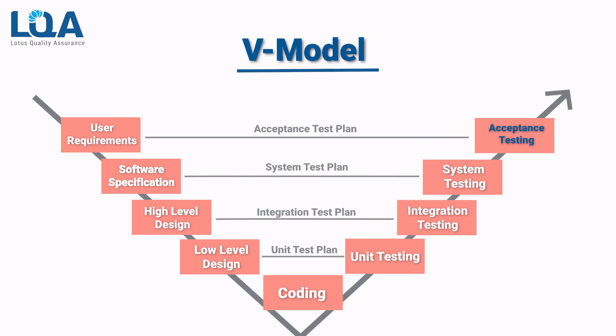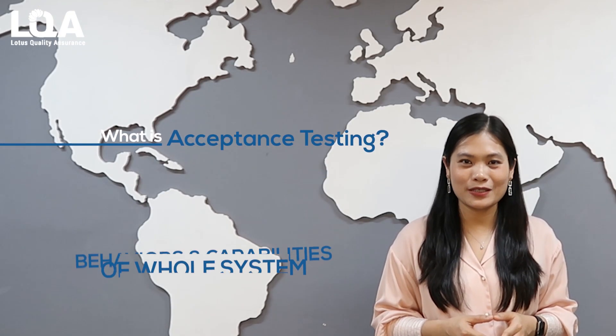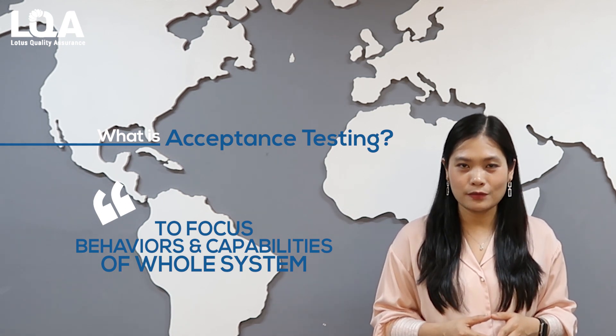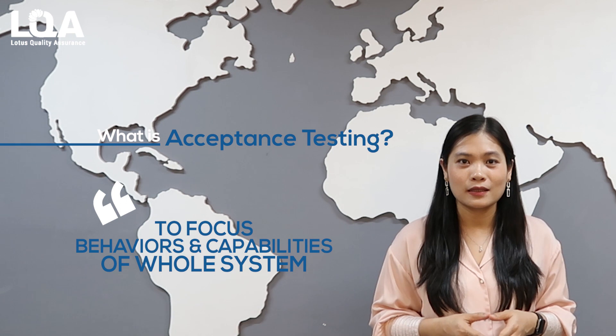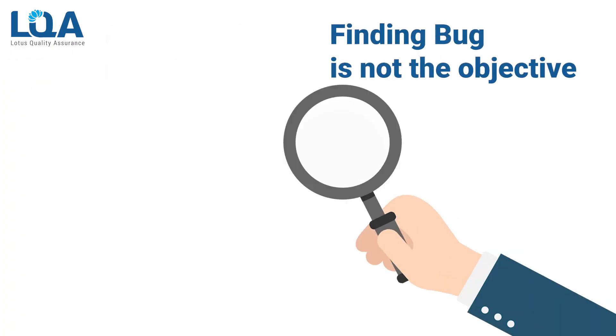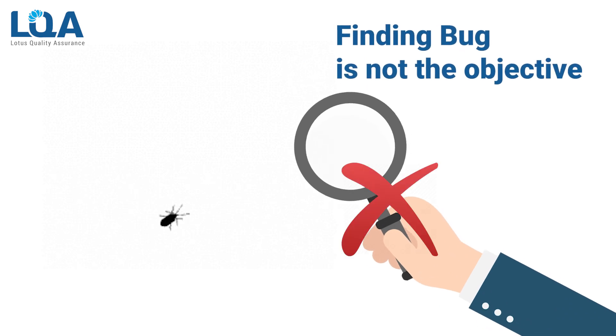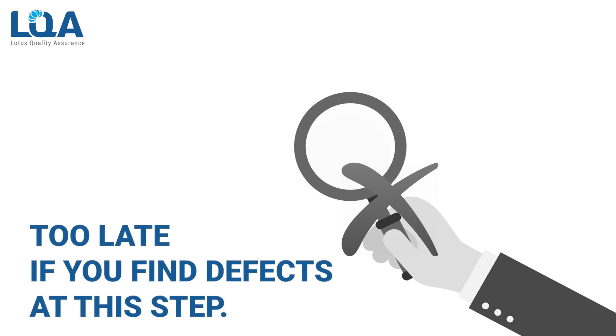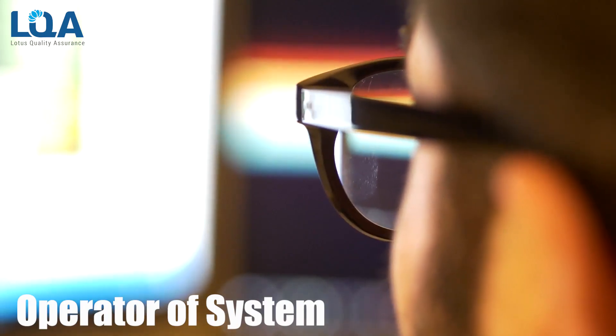The last level is acceptance testing. Acceptance testing is similar to system testing — it focuses on the behavior and capabilities of the whole system and product. But it differs from system testing in that it produces information to determine the system's readiness for deployment and use by end-users. Finding bugs is not the objective of acceptance testing, because it would be too late if a defect were found at this stage. Acceptance testing is the responsibility of the customer, business user, product owner, and operator of the system.